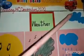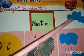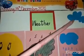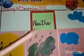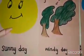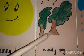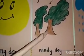Okay beta. How is the weather today? Today is a cloudy day. How is the weather today? Today is a sunny day. How is the weather today? Today is a windy day. How is the weather today? Today is a rainy day.